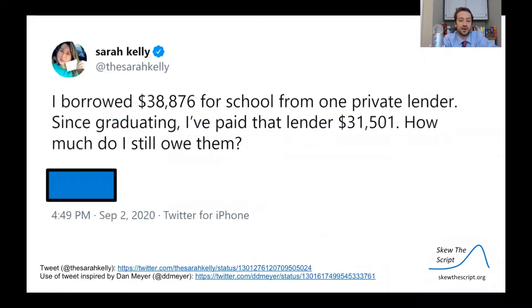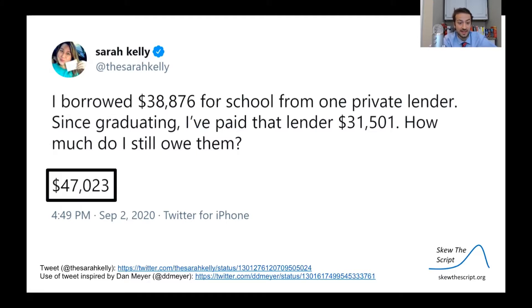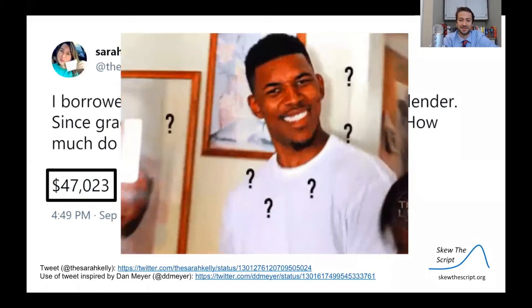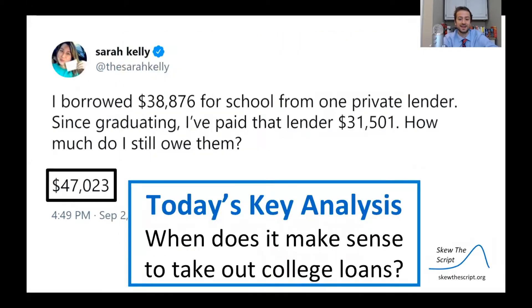The other day, I was scrolling through Twitter and saw this tweet that went viral. A simple question is posed here: borrowed nearly $39,000 for school from a private lender. Since graduating, Sarah has paid that lender about $31,000. How much does she still owe them? The answer, surprisingly, is about $47,000 left, which is even more than she originally borrowed. How does this happen? The key analysis today will be when does it make sense to take out college loans, and hopefully try your best to avoid situations like this.